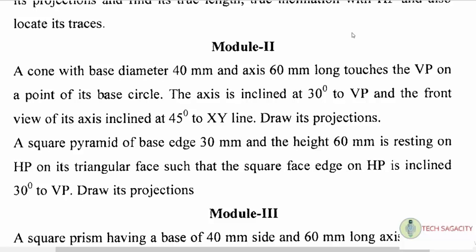Looking at the solid, there's a cone. A cone basically has a diameter and an axis. This cone is where in the VP — it touches the VP at a point.